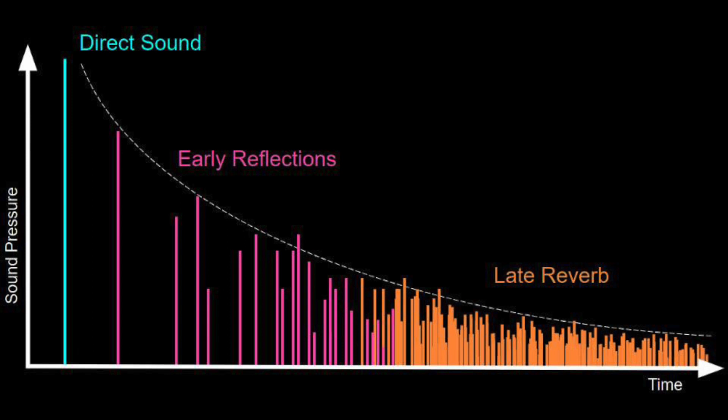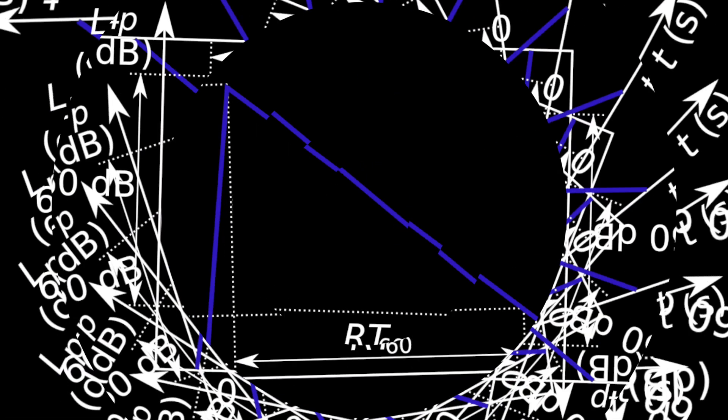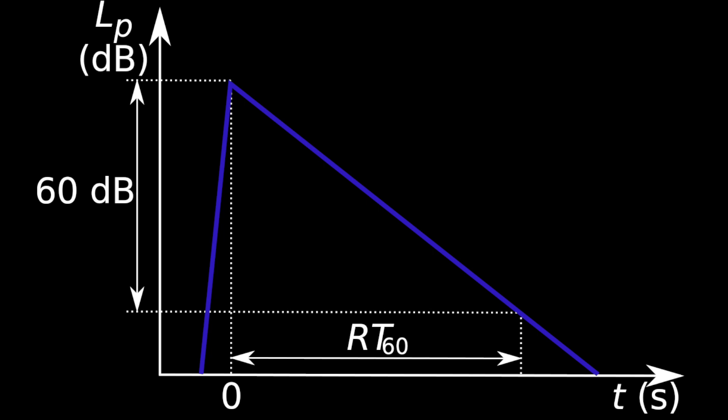However, at a high level, the pattern often includes a series of early reflections, followed by more dense later reflections, with the overall sound level of successive reflections following an exponentially decaying pattern. If we switch the plot to a logarithmic scale measured in decibels, the exponential curve becomes linear.